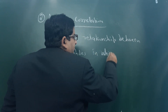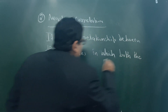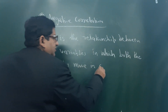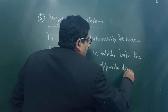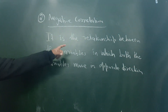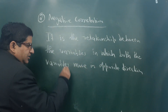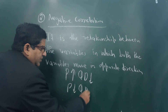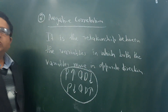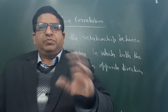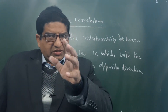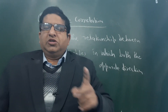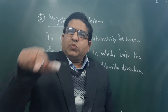The most important example of negative correlation is price and demand. If the price increases, then the quantity demanded decreases. From the consumer's point of view, both variables move in the opposite direction. If x is bigger, then y is smaller.